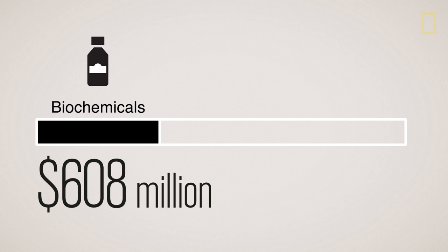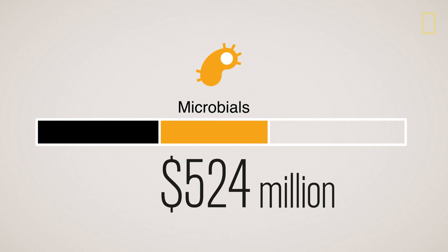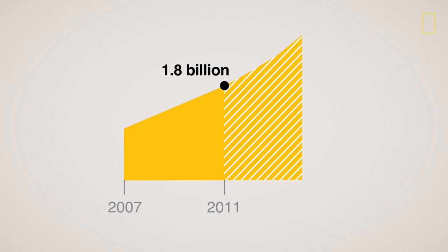Of all biopesticide sales in 2011, biochemicals such as scented plant extracts had the largest share. Sales also included microbials such as bacteria and viruses, more than 300 species of insects, and other combatants like pheromones and roundworms. These products are a small part of the total pesticide market, but their share is growing as consumers demand more chemical-free food.